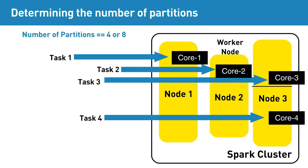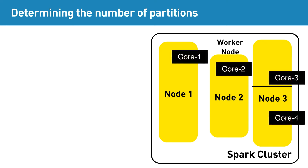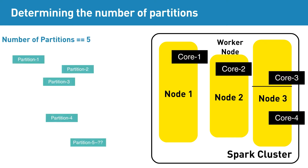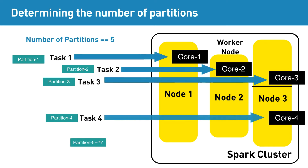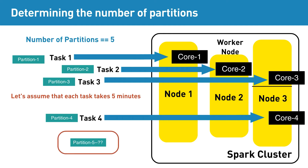So, we should be setting the number of partitions to be at least equal to the number of cores, or maybe two or three times that. For example, with a four-core cluster and five partitions, the first four partitions will run in parallel using the four cores and get processed in five minutes, assuming each task takes five minutes. The fifth partition will be processed as a separate task, taking another five minutes, leading to ten minutes of total execution time.